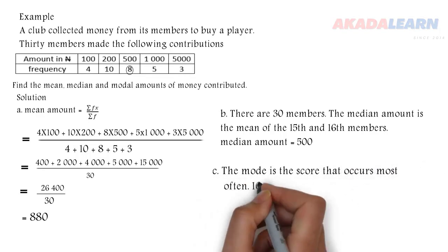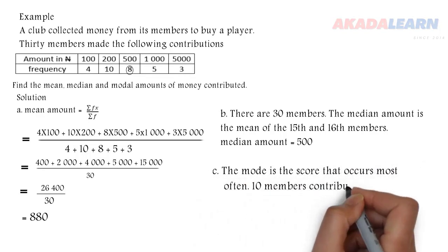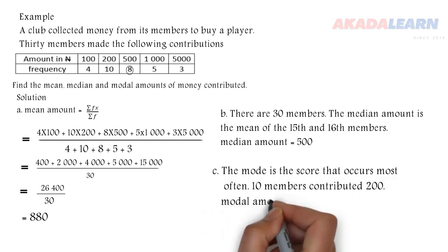Now let's see the mode. The mode is the score that occurs most often. And when we look at the frequency, we discover that the highest is 10. So the mode is 200.